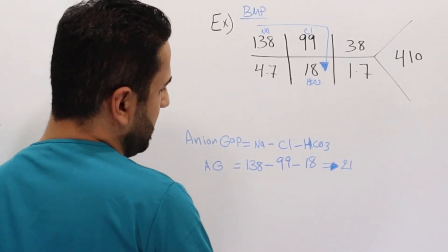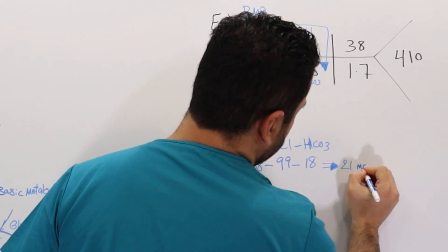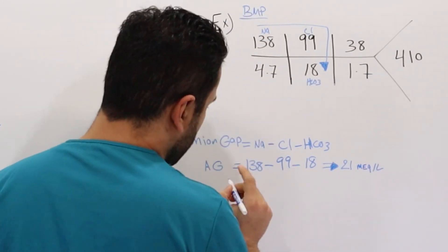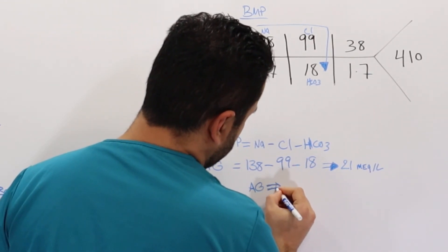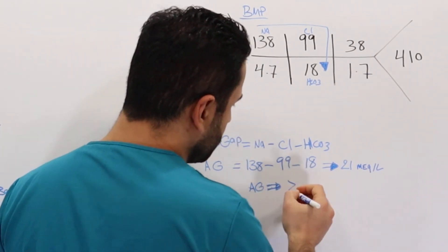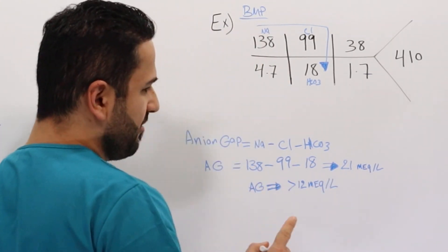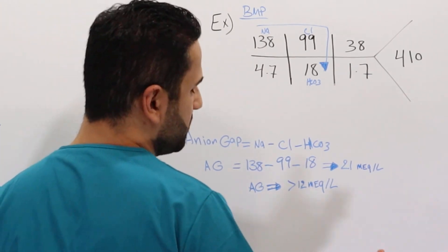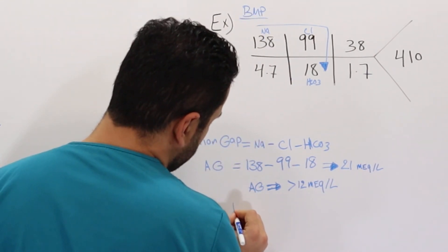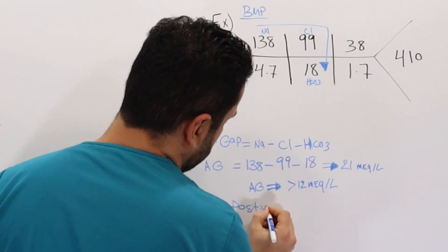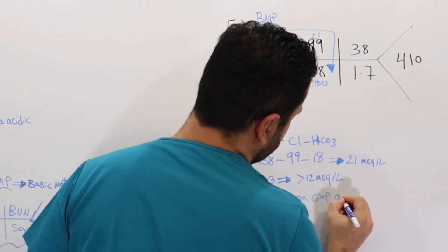And what did I say just recently? I said if anion gap, so this is going to be milliequivalent per liter, if anion gap is basically larger than 12 milliequivalent per liter, then in this case we have a positive anion gap, which is acidosis, which means we have acidic blood. Because we have 21, therefore we have positive anion gap, which is acidosis.